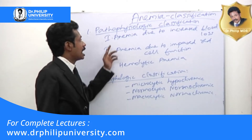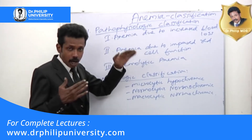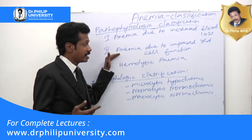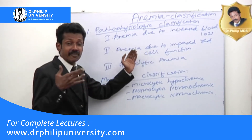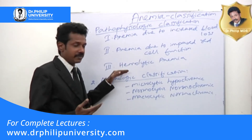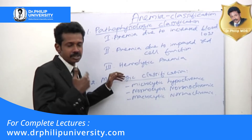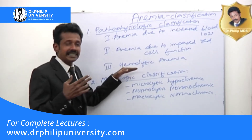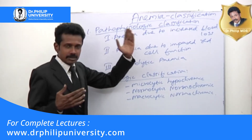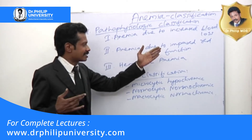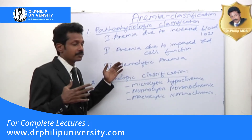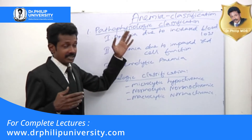In the pathophysiology classification, we divide anemia into three types. The first type is anemia due to increased blood loss. The second type is anemia due to impaired red cell function. And the third type is hemolytic anemia, which is due to destruction of blood cells. These are the three basic types of anemia in the pathophysiology classification.